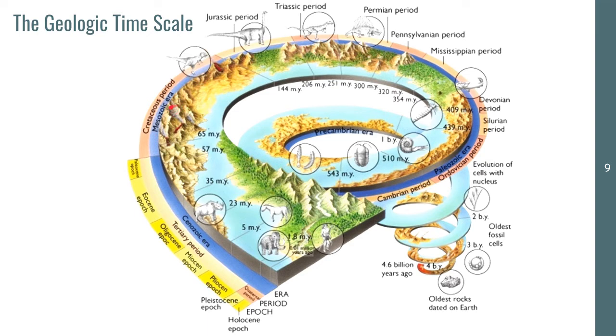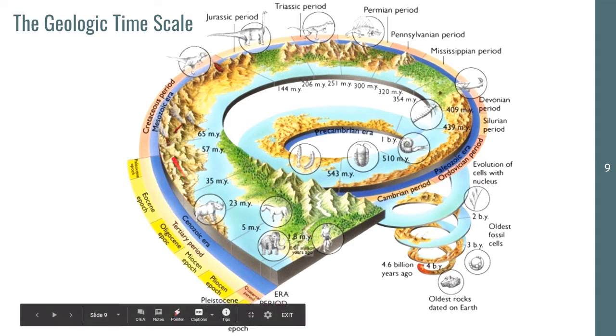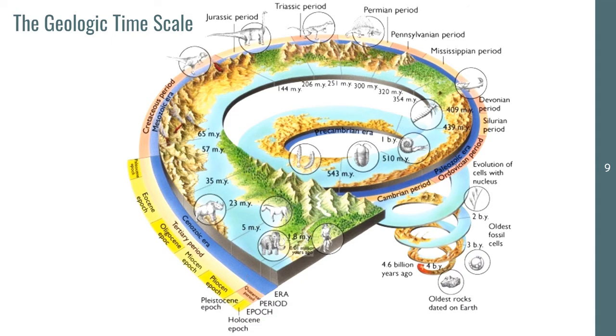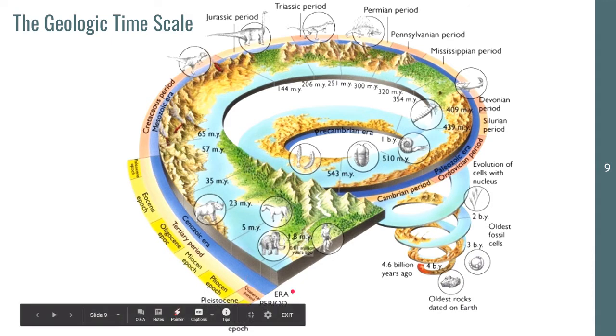This is until the Mesozoic era—Mesozoic, it's in the middle. Then right after that is the Cenozoic era. That's the modern era. You have your Eocene period, Oligocene period, Miocene, Pleistocene.